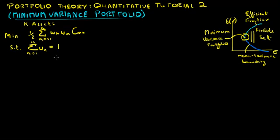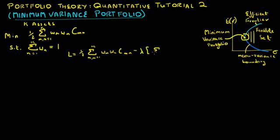Notice that we don't specify any particular return target here, because we're trying to find the minimum variance portfolio and not one that meets a particular return target. So let's set up a Lagrangian to solve this optimization problem.